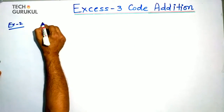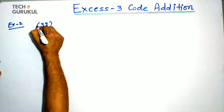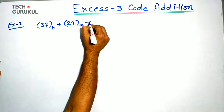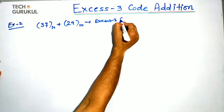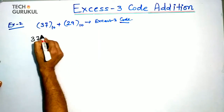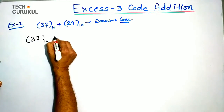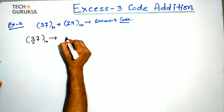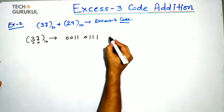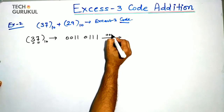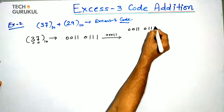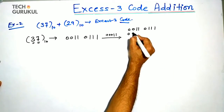Example 2: add 37 plus 29 in XS3 code. Similarly, we write 37 and find its BCD equivalent. For 3, the BCD is 0011; for 7, the BCD is 0111. Now we add 0011 to each BCD digit to convert to XS3. So for digit 3: 0011 plus 0011 gives 0110. For digit 7: 0111 plus 0011 gives 1010. We add 3 to make it the XS3 code.